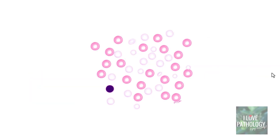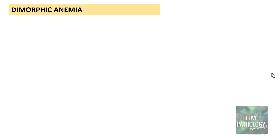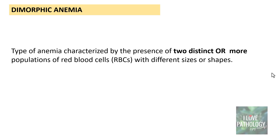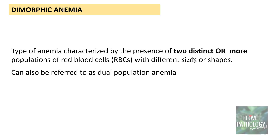Today we will be discussing a different type of blood picture where you find two distinct populations of red blood cells — that is dimorphic anemia. As the name says, this is a type of anemia characterized by the presence of two distinct populations — ideally two, but sometimes more — of red blood cells with different sizes or different shapes. Practically speaking, we predominantly encounter two different size populations, and it is also referred to as dual population anemia.